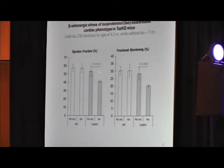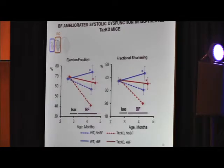What did isoproterenol do? Isoproterenol actually had not much effect on systolic function in wild-type mice. However, in tafazine knockout mice, it worsened, aggravated cardiac phenotype in fractional shortening and ejection fraction.